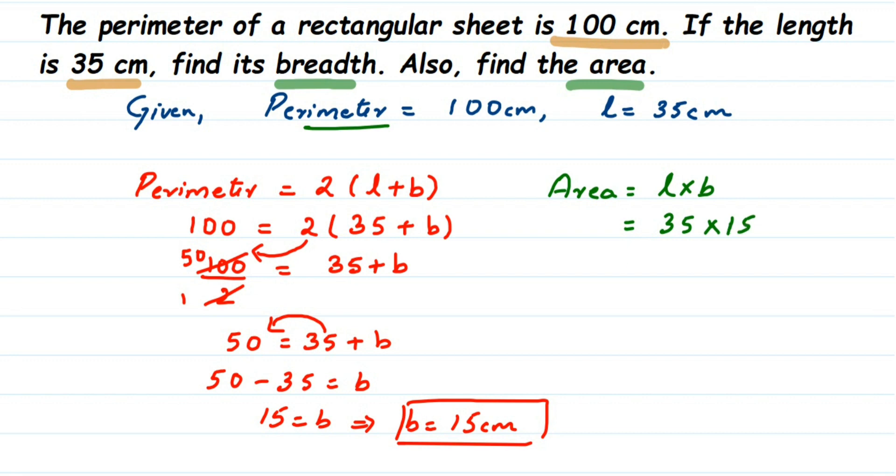35 into 15, when you do it you will get 525. So this is 525 centimeter square, because length and breadth both are in centimeters. Area is two-dimensional, that is where you get centimeter square. Perimeter is one-dimensional, so you have only one unit.